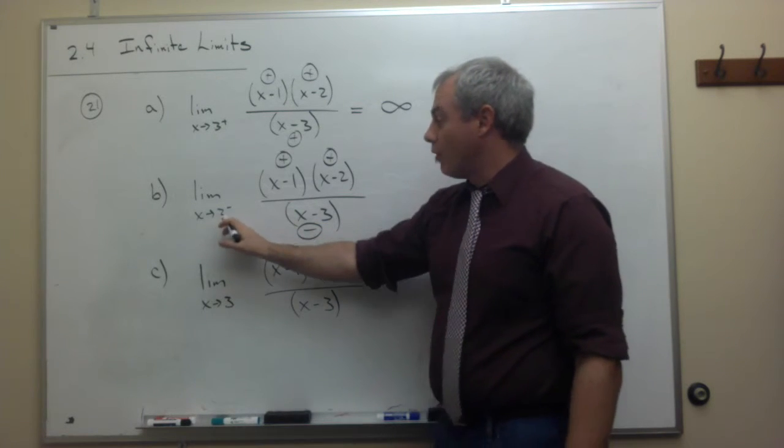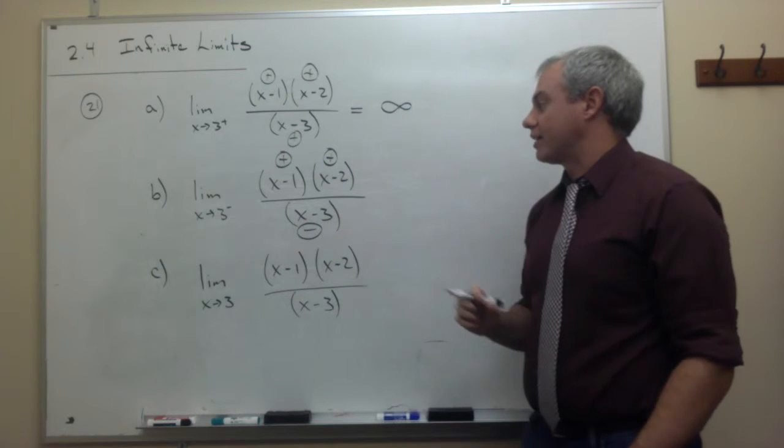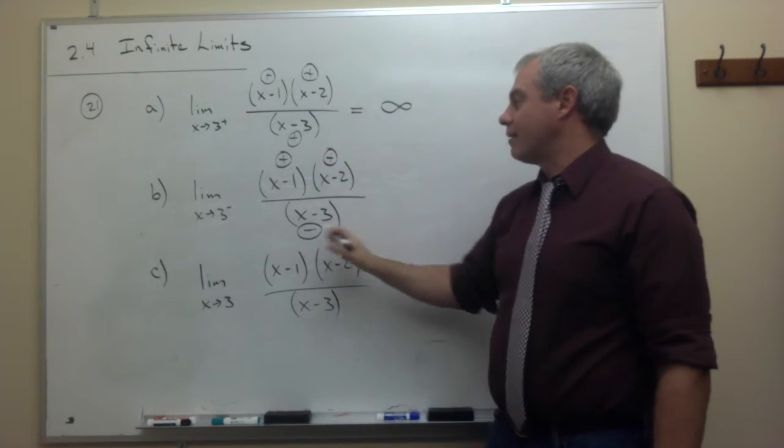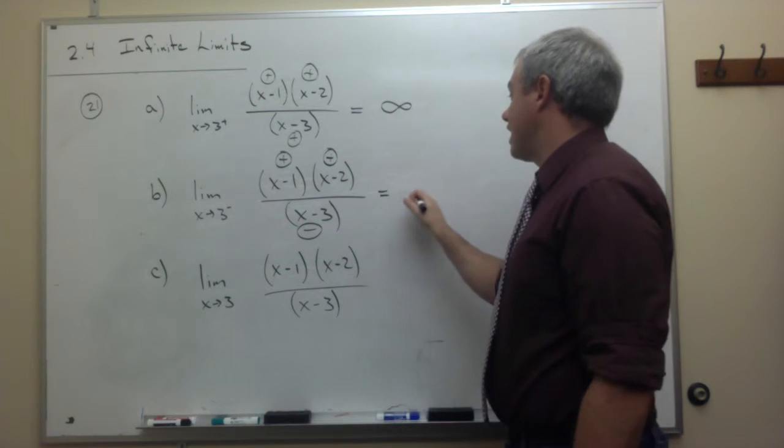Because it was slightly smaller than 3, and I subtracted 3 from it. So, I've got a positive times a positive divided by a negative. That's negative.